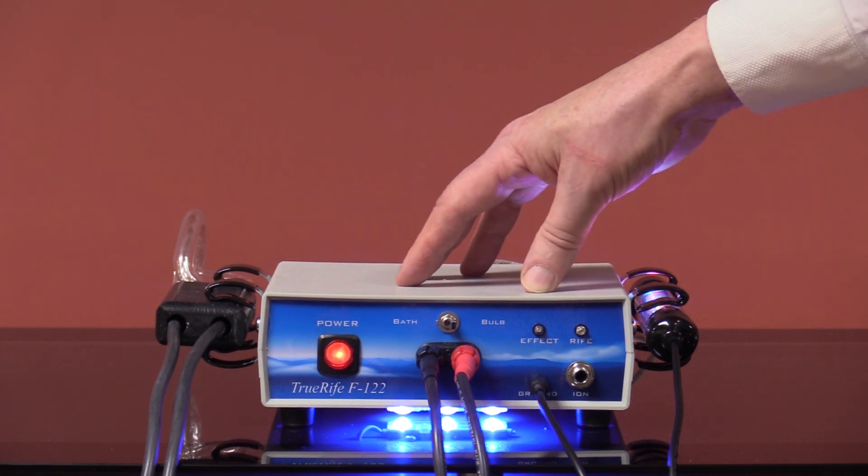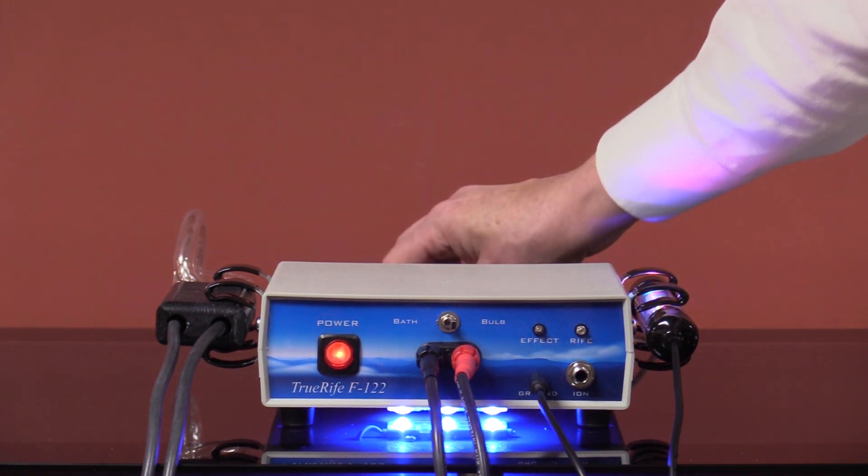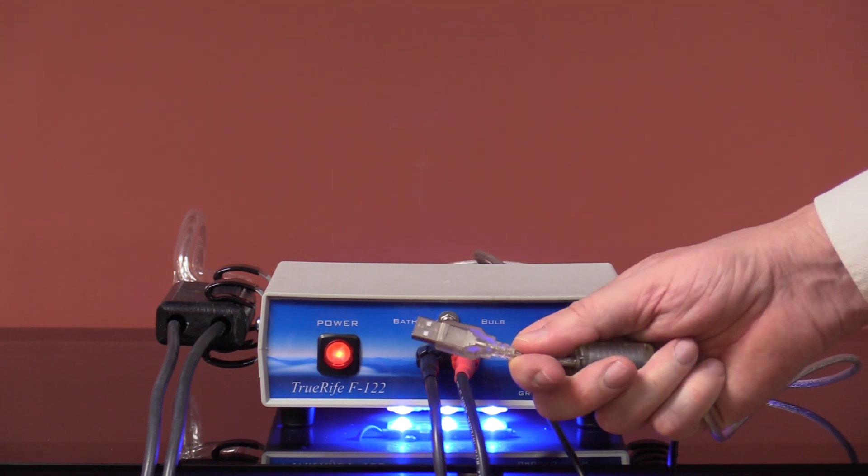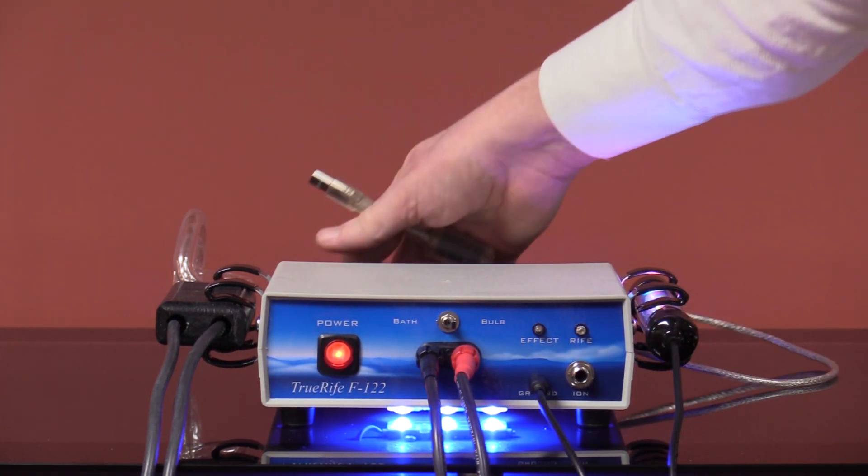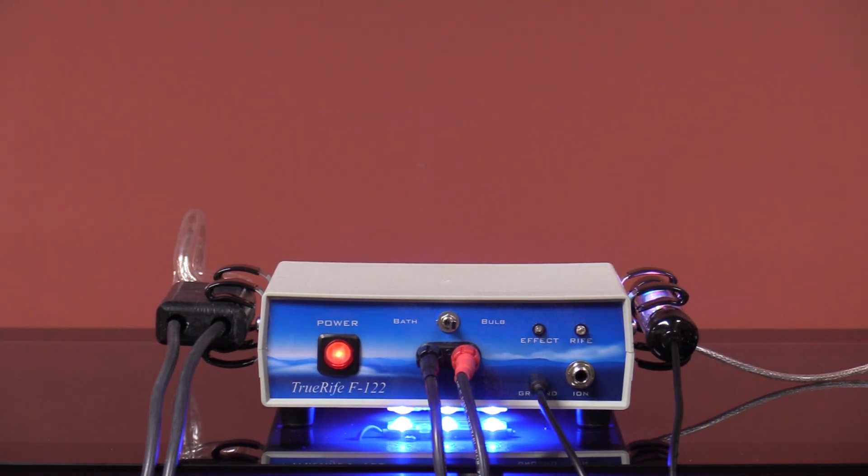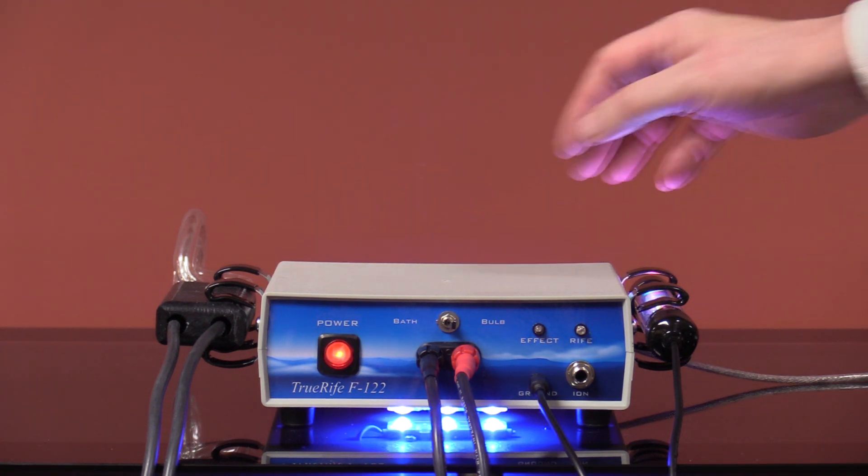So at this point you can actually start running a program. But to do that, you have a USB cable. This would be plugged into your computer and it's plugged into the back of the F-122 as well. So at this time, we'll plug this into the computer and we'll demonstrate what a program looks like when it's running.